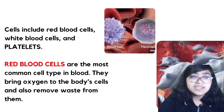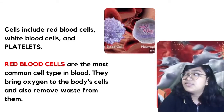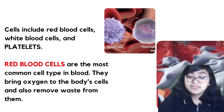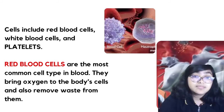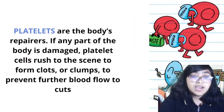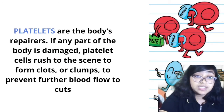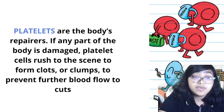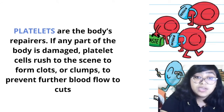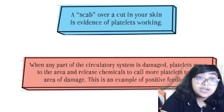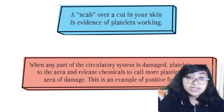Red blood cells are the most common cell type in the blood. They bring oxygen to the body's cells and also remove wastes from them. Platelets are the body's repair cells — if any part of the body is damaged, platelet cells rush to the site and form clots or clumps to prevent further blood loss from cuts. The scab that forms on your skin is evidence of platelets working.